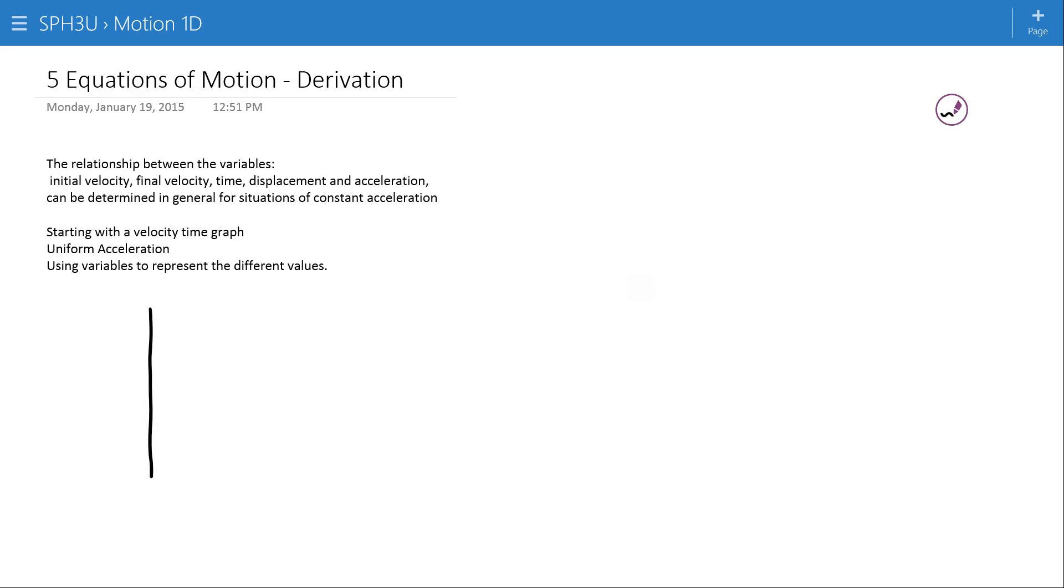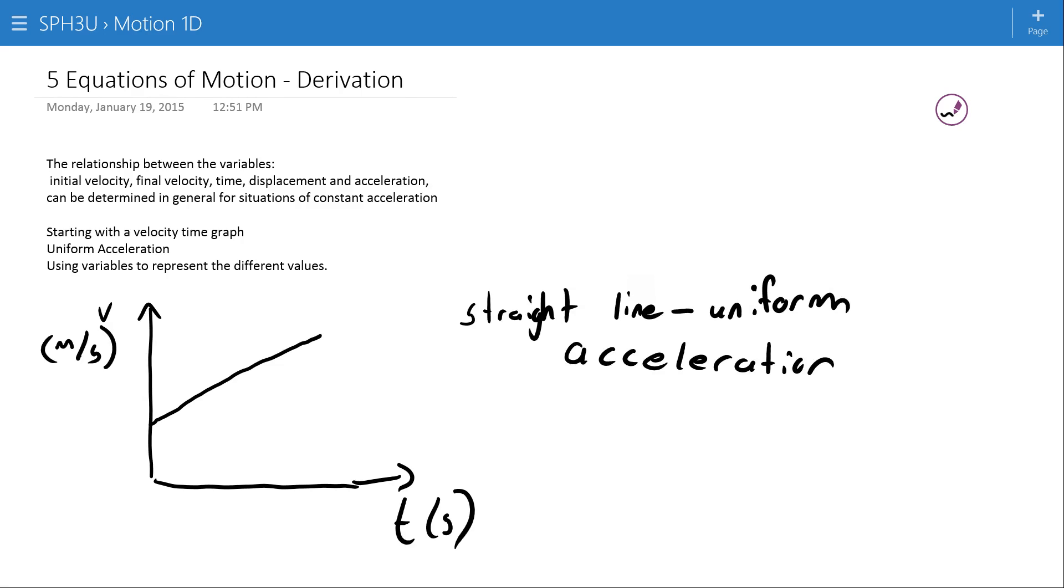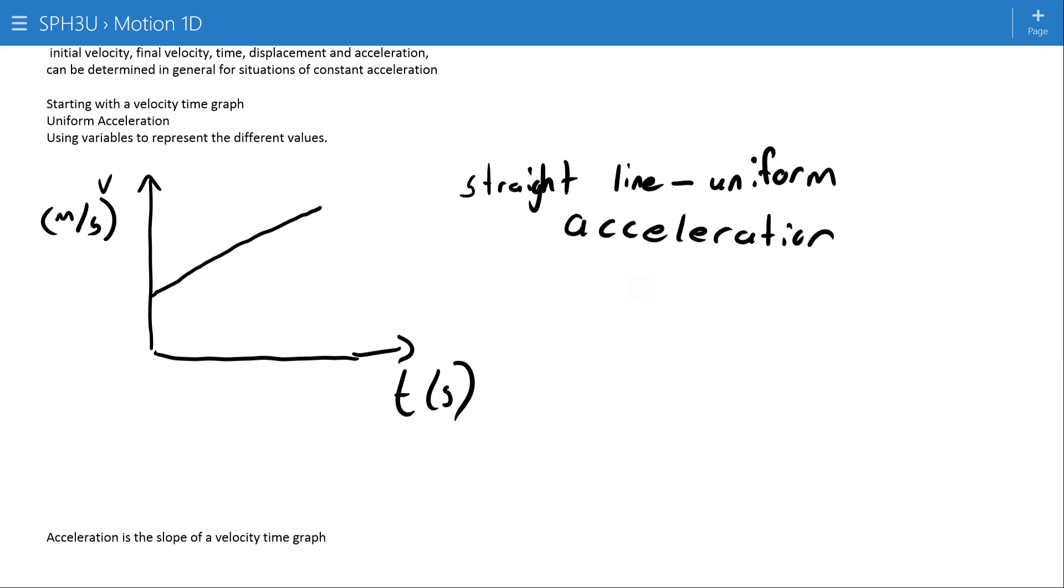To do that, we're going to start with a velocity time graph. I'm going to keep things fairly general so that these equations will apply to as many different situations as possible. However, I do need to make one stipulation or one requirement of these equations. You'll notice that the graph is a straight line, which means uniform acceleration. This means that once these equations are derived, you'll only be able to use them for situations that have a constant or a uniform acceleration. If the acceleration changes, these equations will not apply.